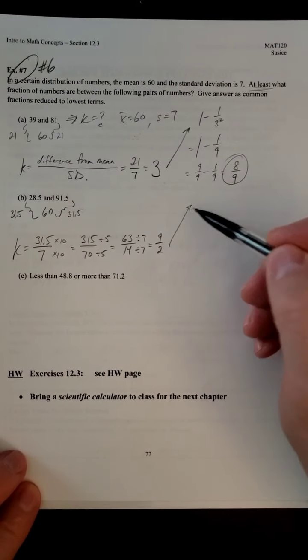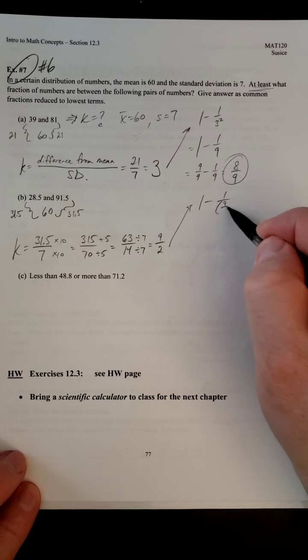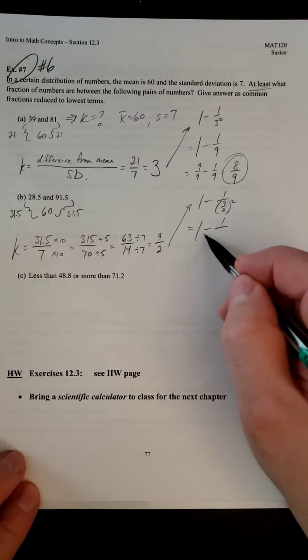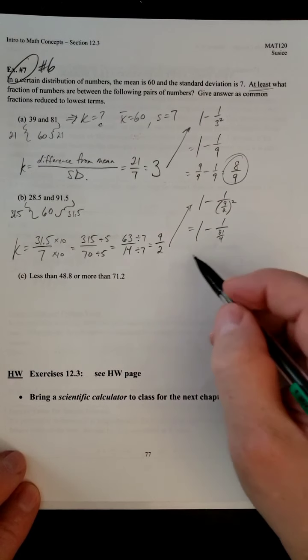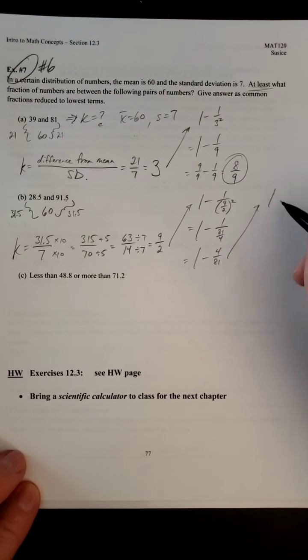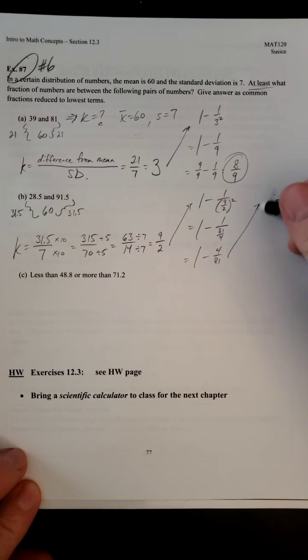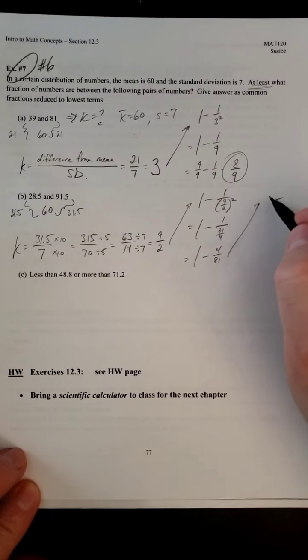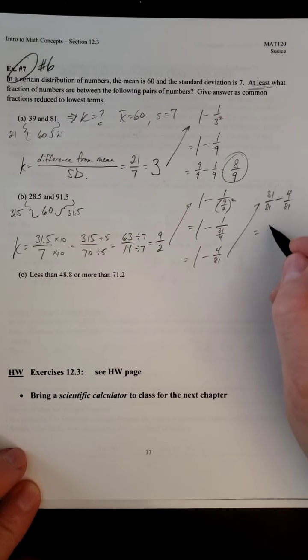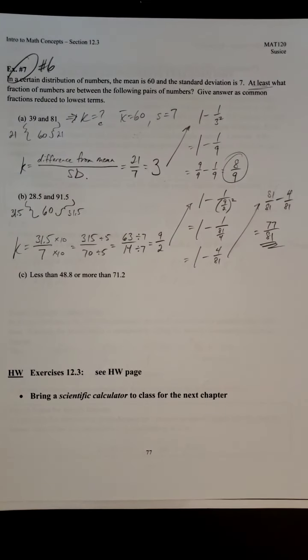Now we can use Chebyshev's again. So we got 1 minus 1 over 9 halves squared. So 1 minus 1 over 81 over 4. Then we can do our little flip trick. Now we can change our 1 into a common denominator fraction. And then we can subtract. So 77 over 81. The fractions are always going to be pretty, but they're doable. As long as you're careful with the steps. Make sure you get a nice value for k.